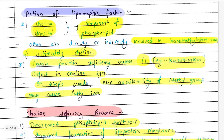Severe protein deficiency causes fatty liver — for example, in kwashiorkor. When there is severe protein deficiency, there will be a defect in choline synthesis. In simple words, non-availability of the methyl group may cause fatty liver.